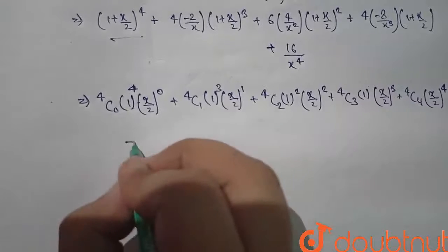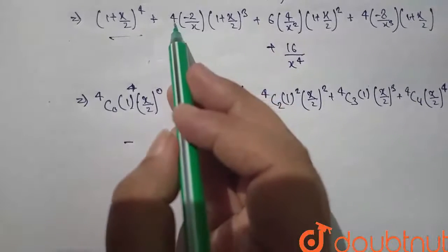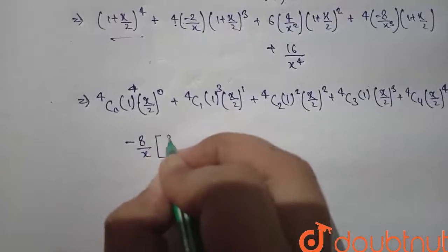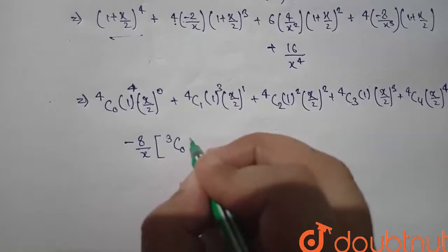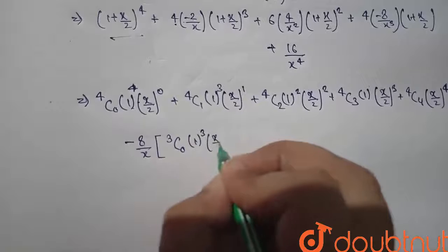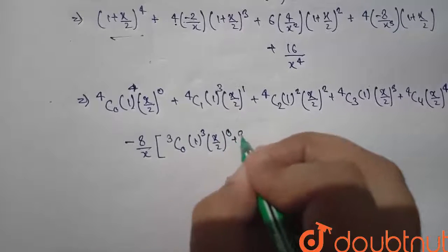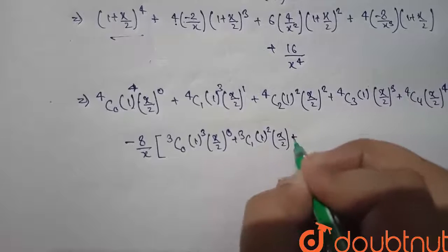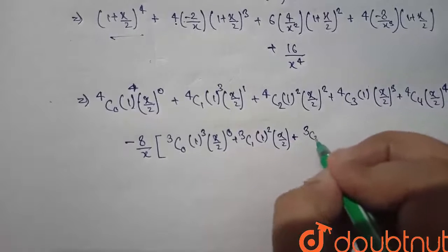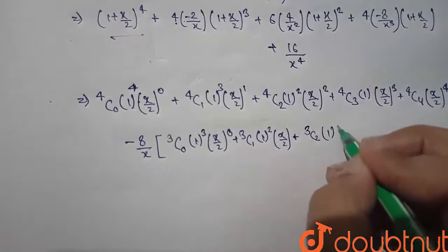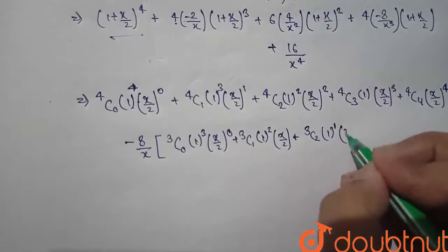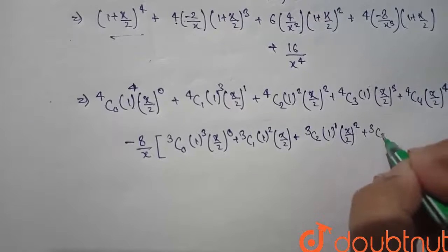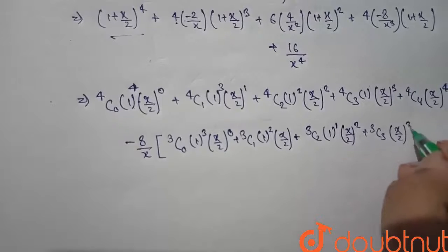Now for the second term, 4 × (-2/x) becomes -8/x, multiplied by the expansion of (1 + x/2)^3: 3C0·1·(x/2)^0 + 3C1·1·(x/2)^1 + 3C2·(x/2)^2 + 3C3·(x/2)^3.